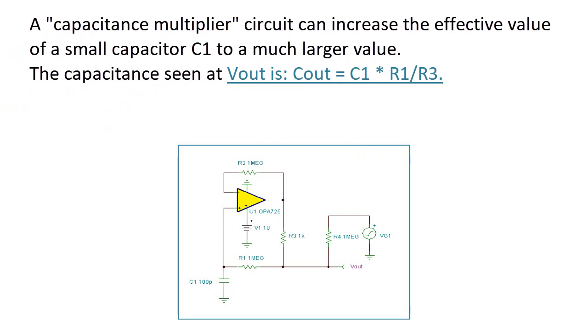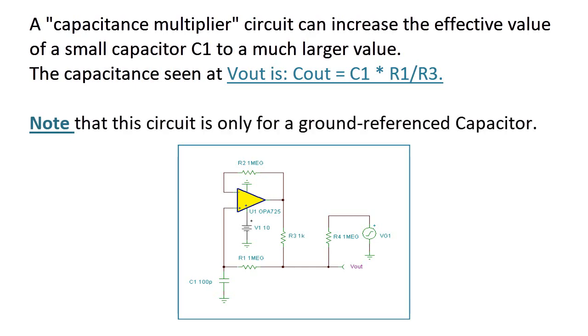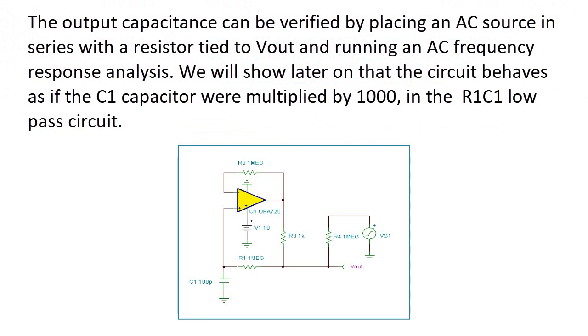The capacitance seen at Vout is Cout equals C1 times R1 over R3. Note that this circuit is only for a ground-referenced capacitor. The output capacitance can be verified by placing an AC source in series with a resistor tied to Vout and running an AC frequency response analysis.